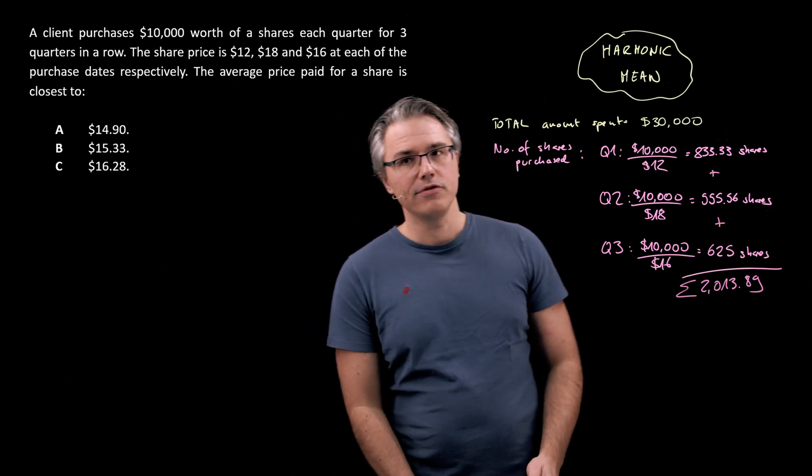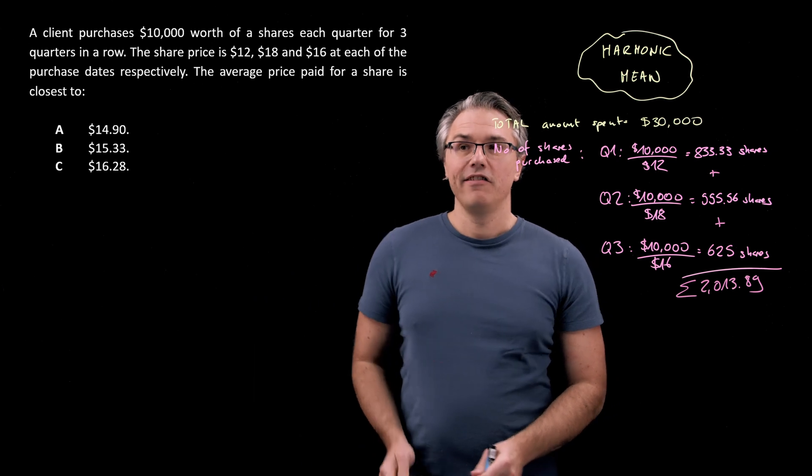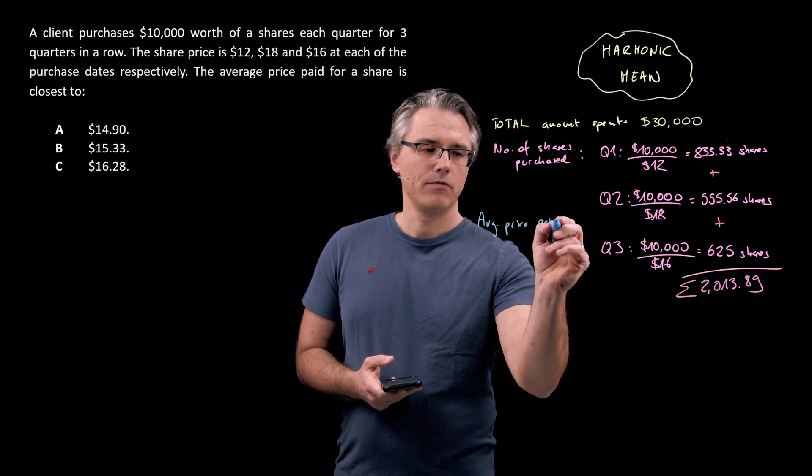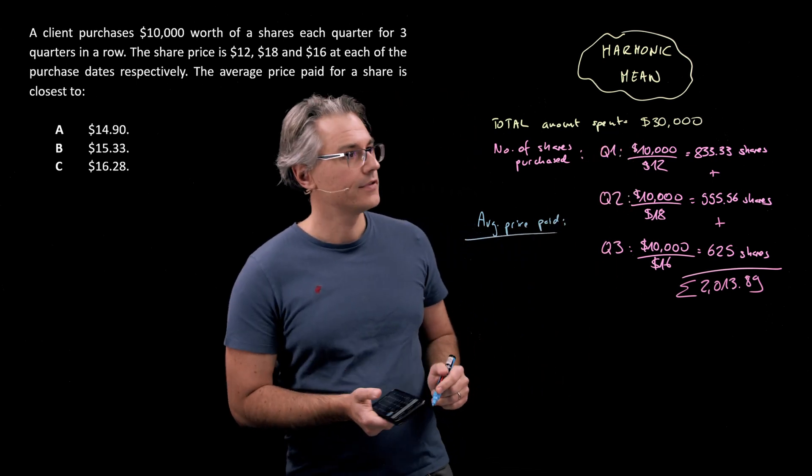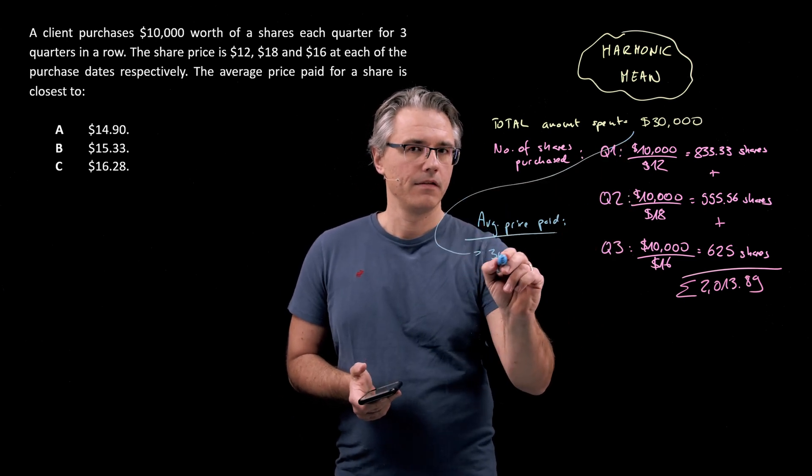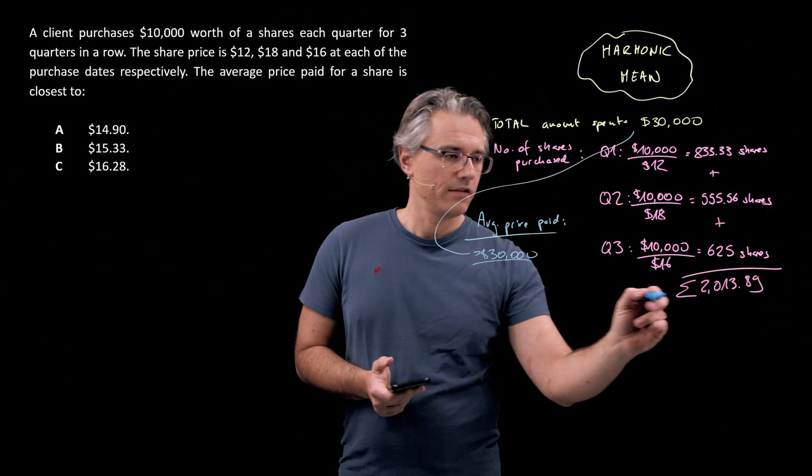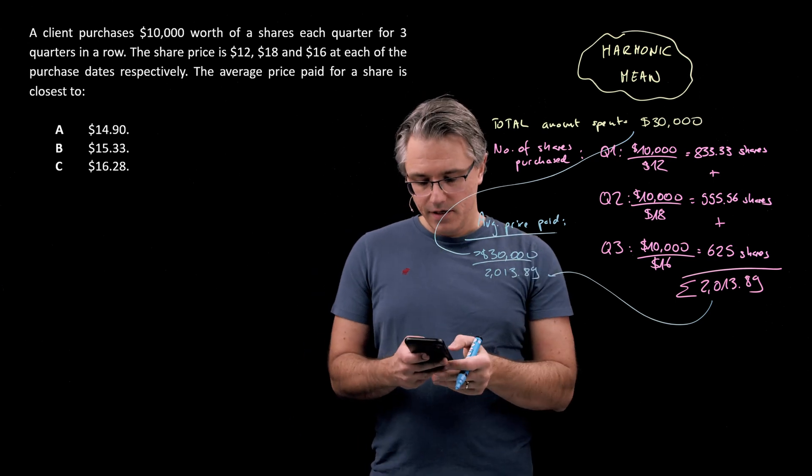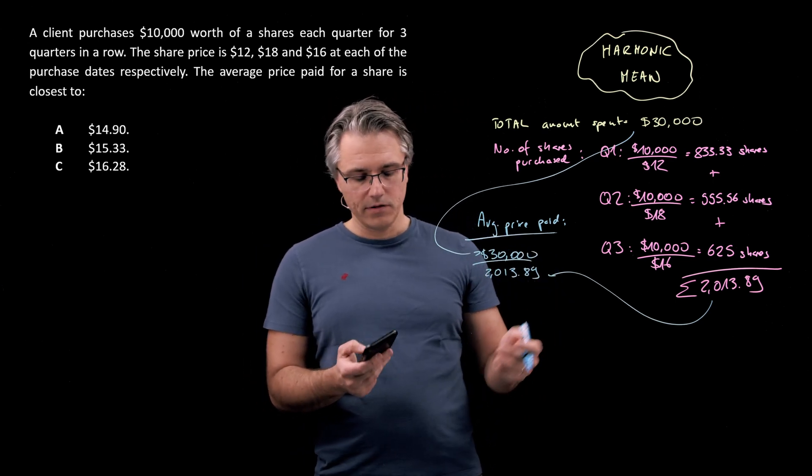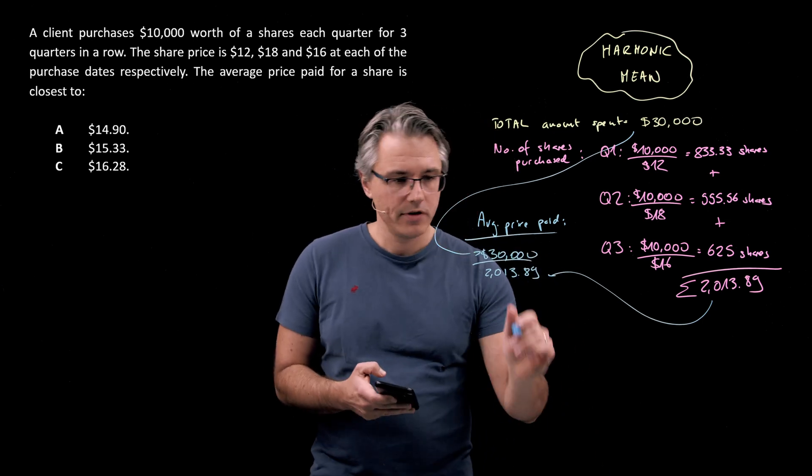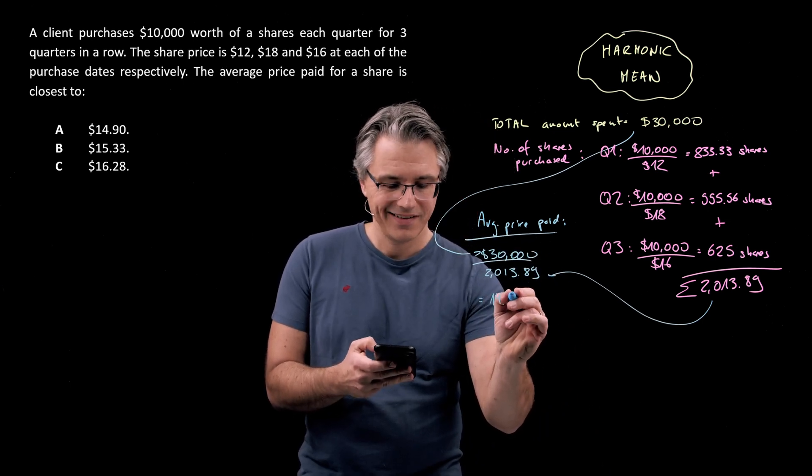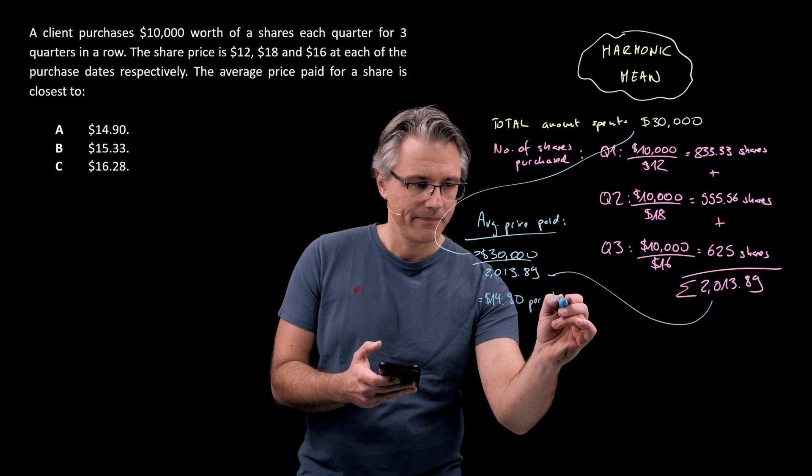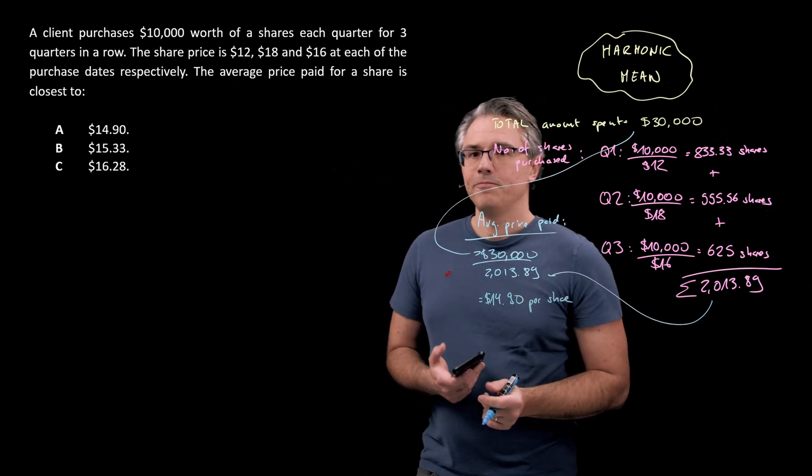And this is something you may want to do in the exam, just in case you forget the relevant formula. So average price paid would be the total amount spent, $30,000, divided by the number of shares purchased, 2013.89. My calculator is telling me that the average price is $14.90 per share.